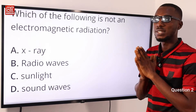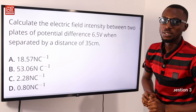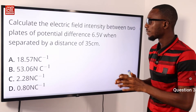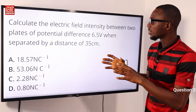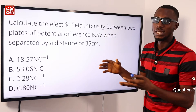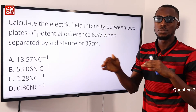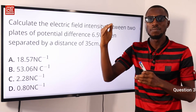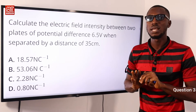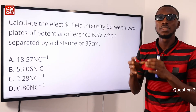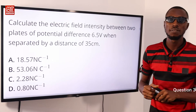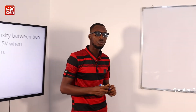Question 3: calculate the electric field intensity between two plates of potential difference, when separated by a distance of 35 centimeters. Recall that electric field intensity relates to electric potential between two points: E = V/d. We convert 35 centimeters to meters, giving 0.35 meters. The formula becomes E = 6.5 / 0.35. Let's use the whiteboard to work out the solution.